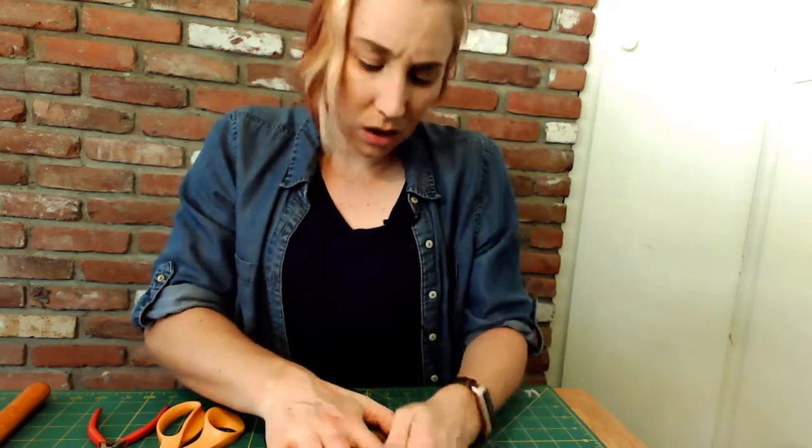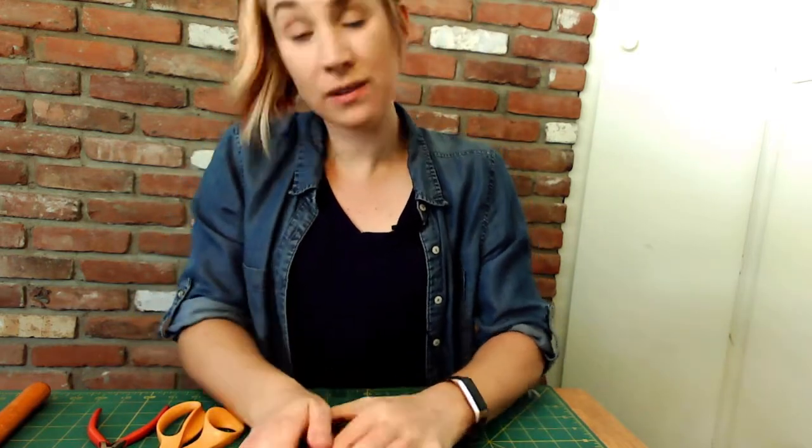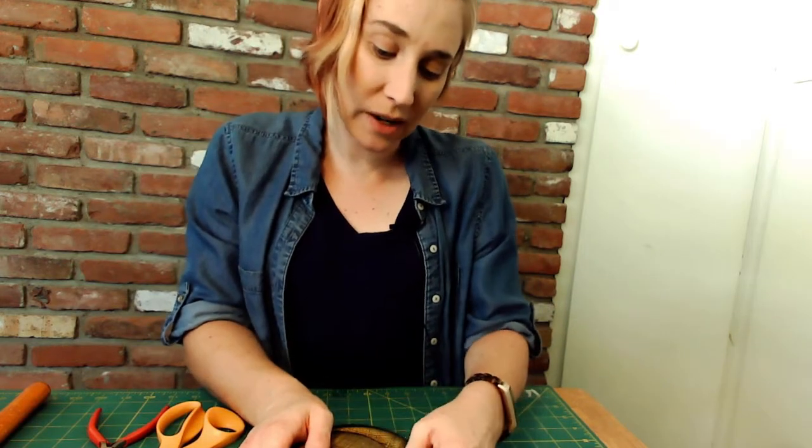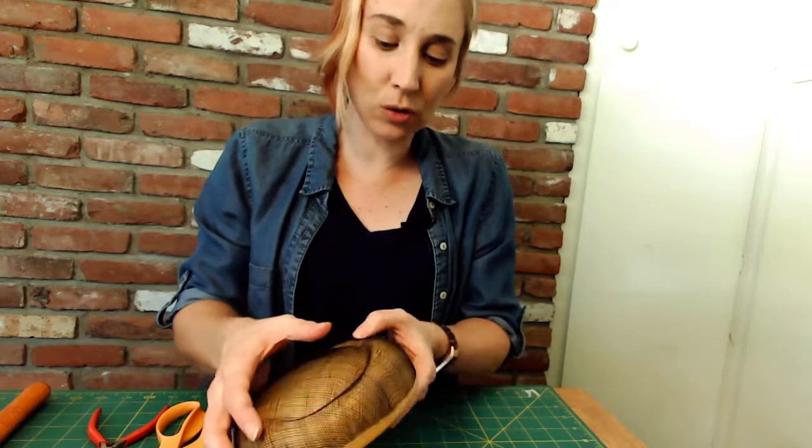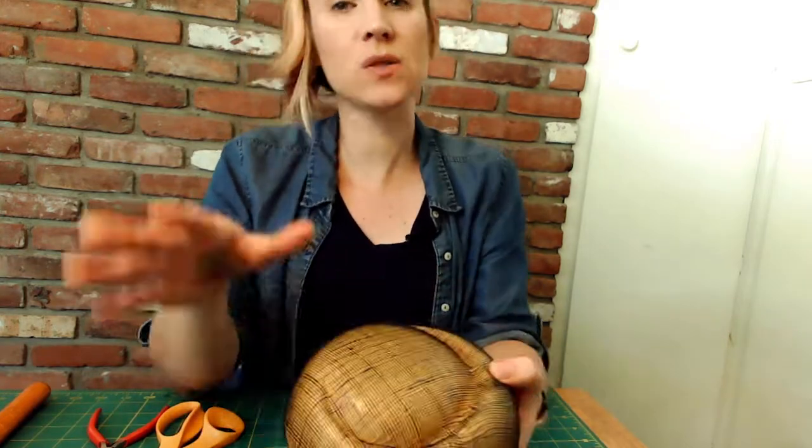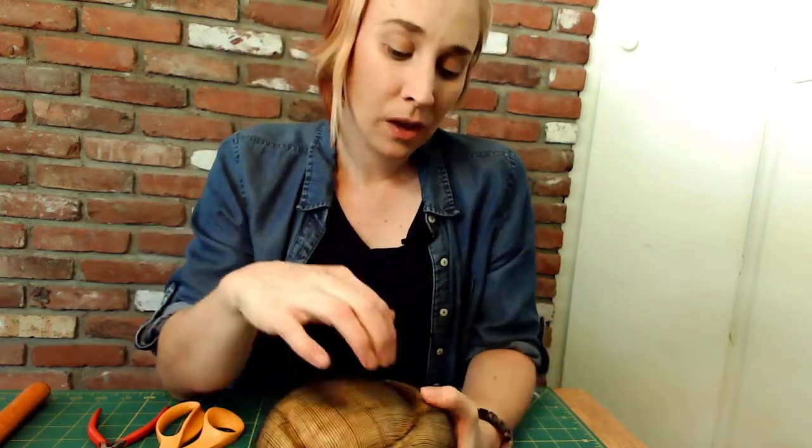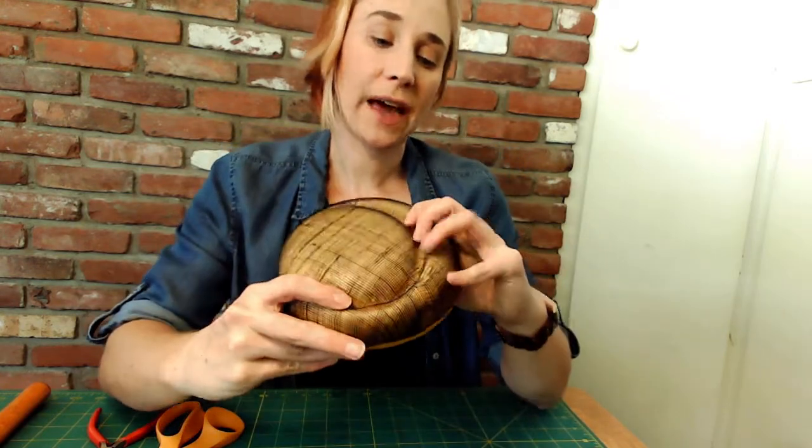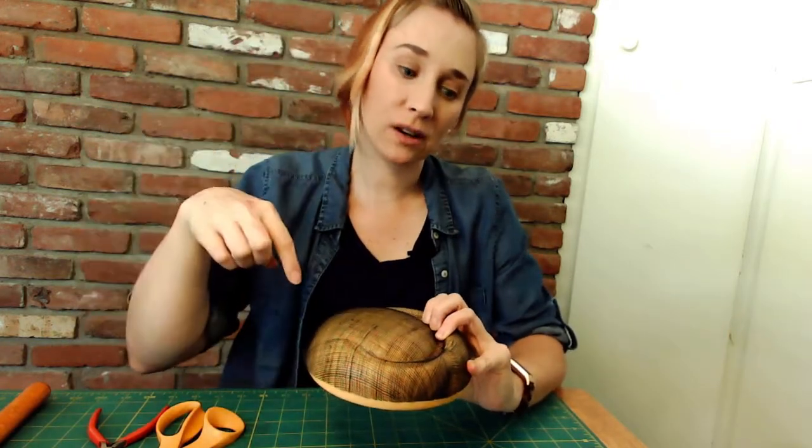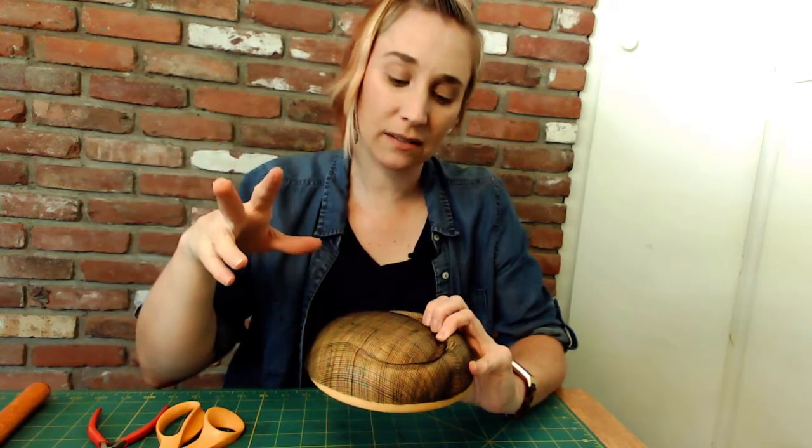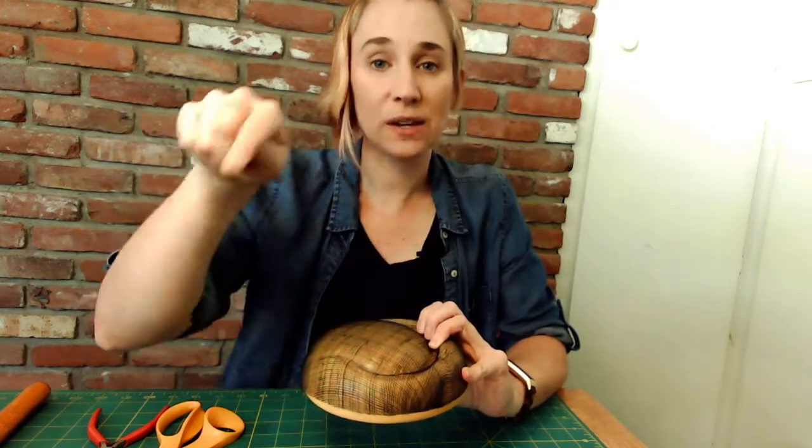And one way to help keep it in the shape that we want it is to do a basting stitch all the way around. And that's going to help to hold the sinamay in place as we stitch it together. Now also, what you can do is, you don't have to use a specific hat block. You could use like a wooden head block and just shape the sinamay over it and then create the outer edge more freehand style by just cutting the shape that you want it to be and then basting that edge.